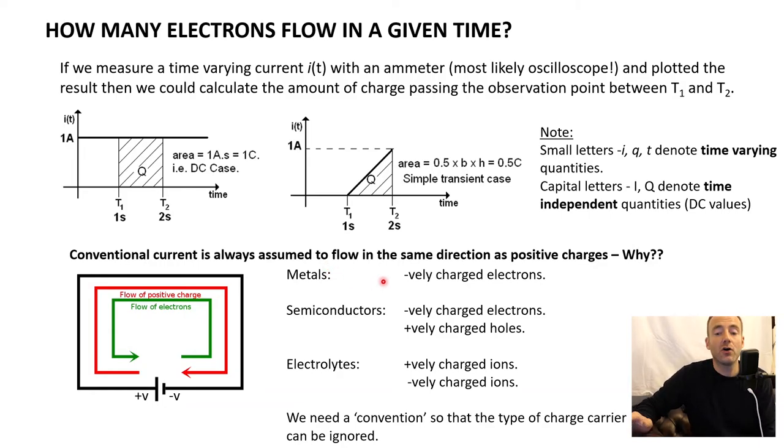And that's basically because we're not always going to be talking about electrons flowing around wires. People sometimes are interested in semiconductors, where both electrons and positively charged holes can conduct currents, or electrolytes, where we have positively charged ions and negatively charged ions. So we need a convention so the type of charge carrier can be ignored. In this series of videos we're always talking about electrons. They're always negatively charged, so they're always going to flow towards the positive terminal of an energy source. We're always going to say that conventional current flows from the positive terminal of a voltage source to the more negative terminal.